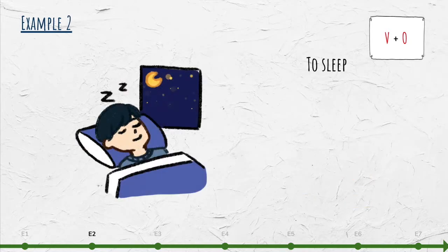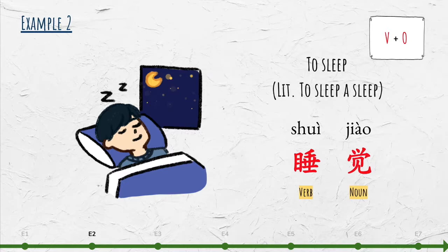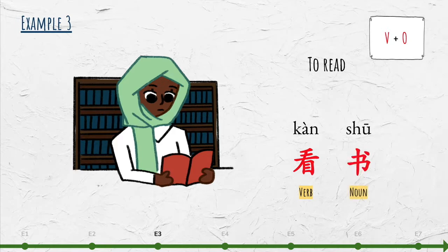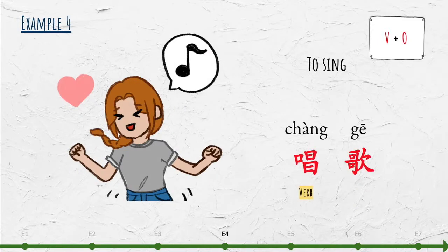Here are some more examples. 'To sleep' (睡觉) is composed of 睡, meaning 'to sleep,' and the noun 觉, meaning 'sleep' — literally 'to sleep a sleep.' 'To read' (看书) is composed of 看, meaning 'to read,' and the noun 书, meaning 'book' — literally 'to read a book.' 'To sing' (唱歌) is composed of 唱, meaning 'to sing,' and the noun 歌, meaning 'song' — literally 'to sing a song.'